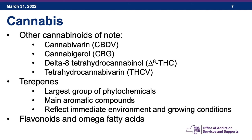Terpenes are the largest group of phytochemicals — they are the chemicals that give cannabis its distinctive smell, the main aromatic compounds, and they reflect the immediate environment and growing conditions. Flavonoids are found in many fruits, vegetables, and grains and have antioxidative and anti-inflammatory effects. Omega fatty acids are the good fatty acids that are protective for heart health and other organ systems.